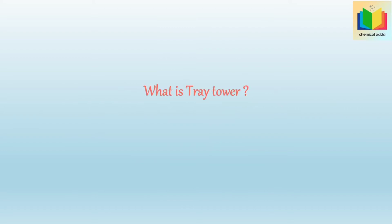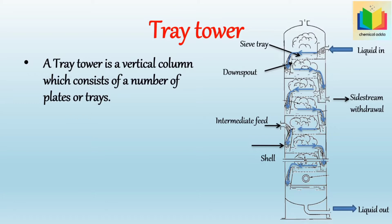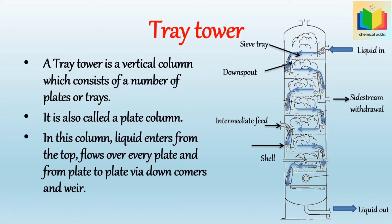The first question is: what is a tray tower? A tray tower is a vertical column that consists of several plates. It is also called a plate column. In this column, liquid enters from the top, flows over every plate, and from plate to plate via downcomers and weirs.